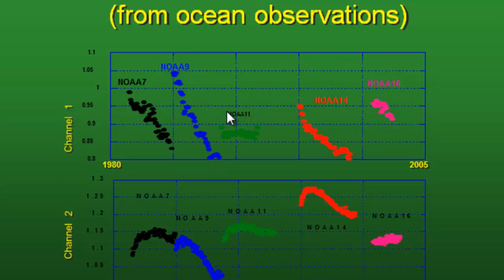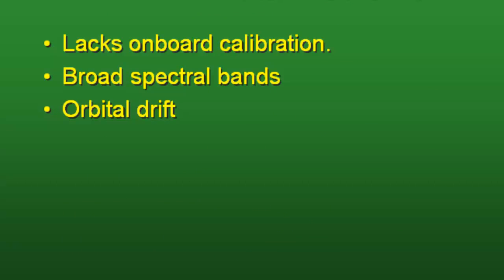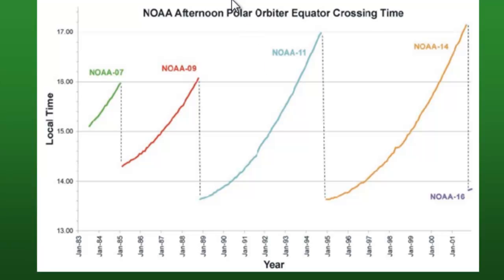What we have to do is estimate this drift or degradation from ocean observations. Another potential problem is orbital drift. Ideally we would like the sensor to remotely sense the same landscape at the same time throughout the time series, but orbital drift occurs. For example, NOAA-7 started at 1500 local time for its overpass but ended at 1600, and NOAA-11 started at about 1350 and by the end of its lifetime was passing over the equator at about 1700. This orbital drift causes a change in solar elevation over the years.